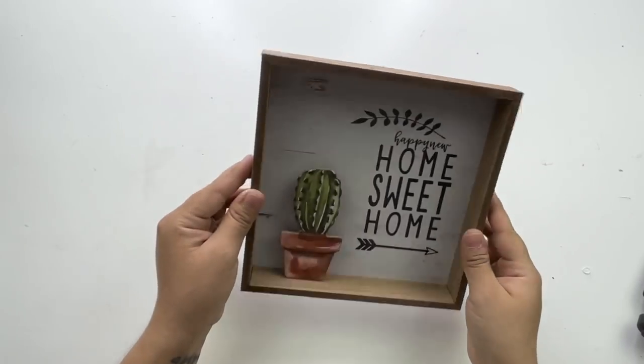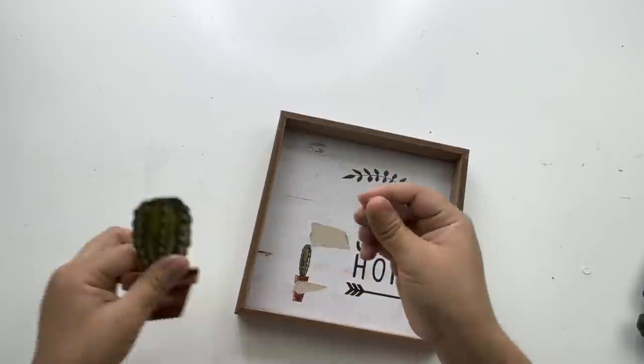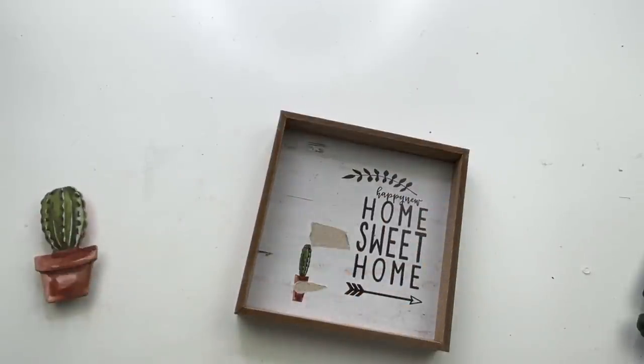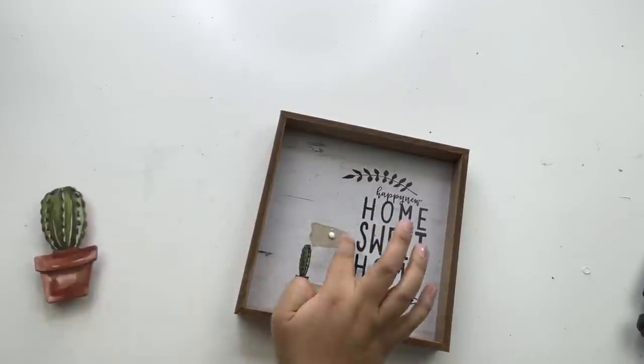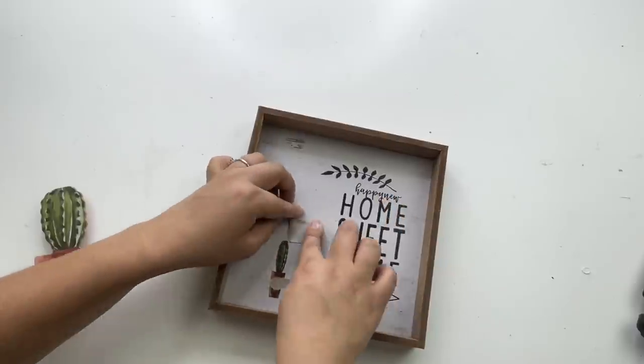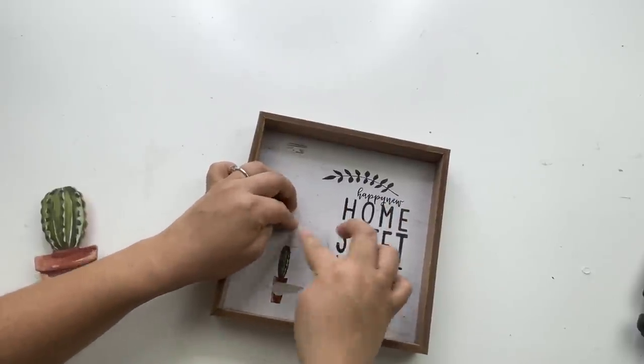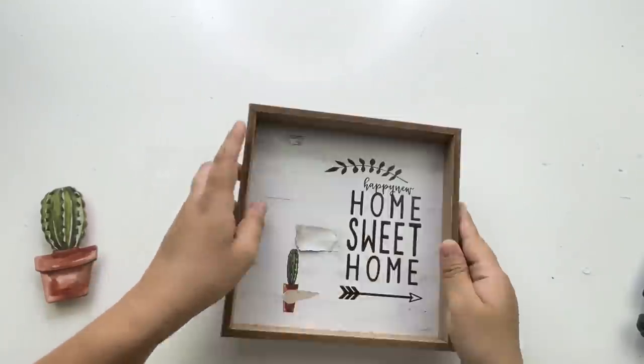For my next project, I will be using this beautiful sign that I got from the Dollar Tree. Now this is already beautiful, so all I'm doing is making this more my style. So I'm going to remove the little cactus planter, and I wasn't careful so I did rip some of the paper off. And I do try to fix it by just placing it back in there, but as you can see you can still tell a lot.